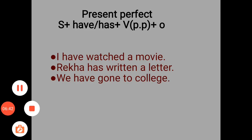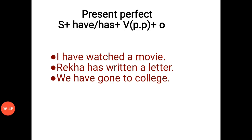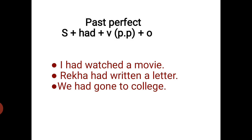Can you guess what will change? Right — only the 'to have' form will change. Now let's see past perfect tense. The structure is: Subject plus 'had' plus verb in past participle form plus object. For example, the first sentence: 'I have watched a movie' becomes 'I had watched a movie' in past perfect.